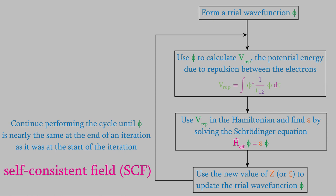So how similar does the trial wave function need to be at the beginning and end of an iteration in order to justify stopping the calculation cycle? Well, that's where the computational work becomes kind of an art. There's no definitive answer because the trial wave function could continue to improve with smaller and smaller changes in each cycle without ever coming to an end. A researcher must decide how small a change in the wave function is acceptable, usually balancing the accuracy of the final result and the time needed for the computation. The more accurate we want the wave function to be, the more cycles will be needed, so the longer the computation will take.